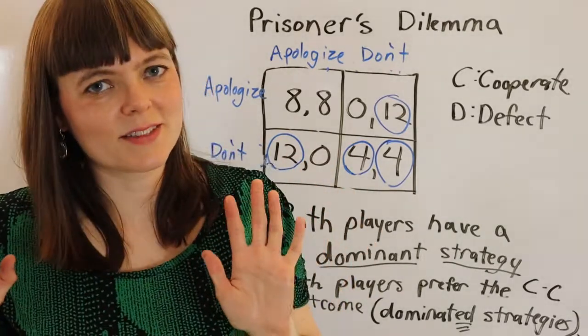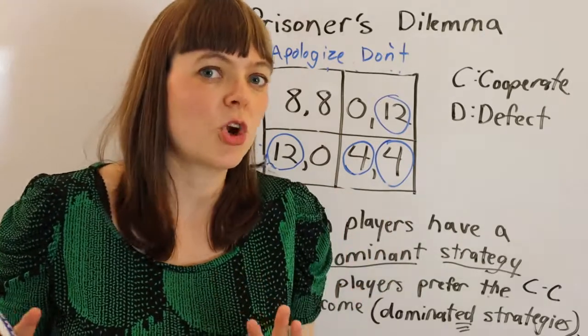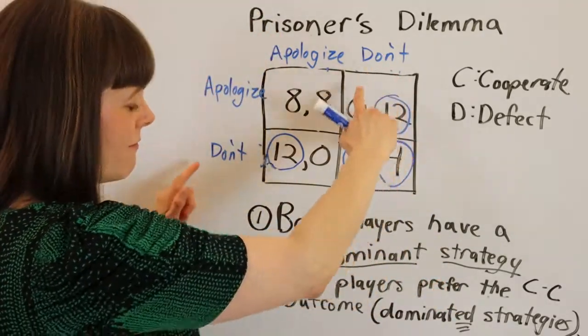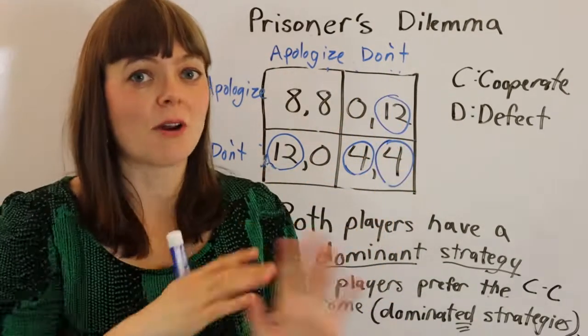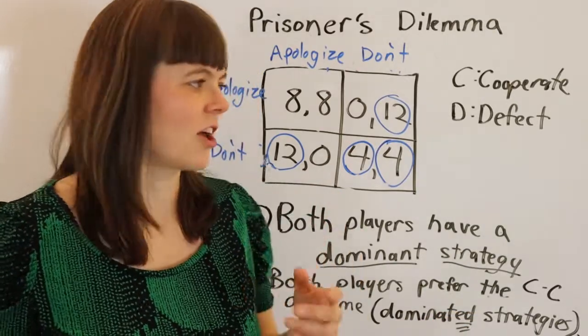So, depending on the payoffs, and of course, these payoffs are not necessarily going to be the case in every friendship, but you could imagine two such people where these were the payoffs. So, if these are the payoffs, then there is a dominant strategy for both players to not apologize. And the friendship's going to have some bad blood for a while. It's not as good.